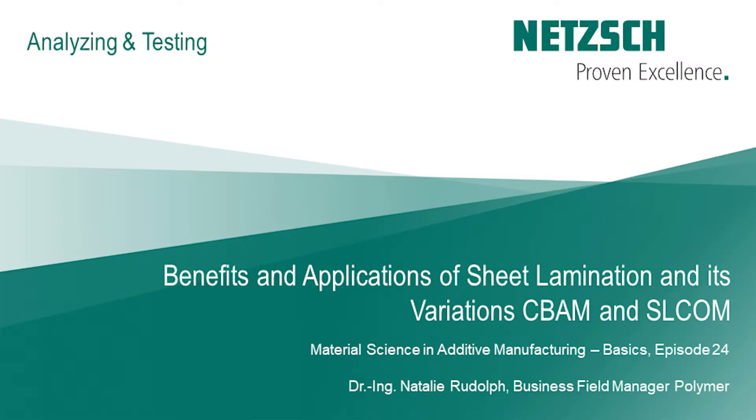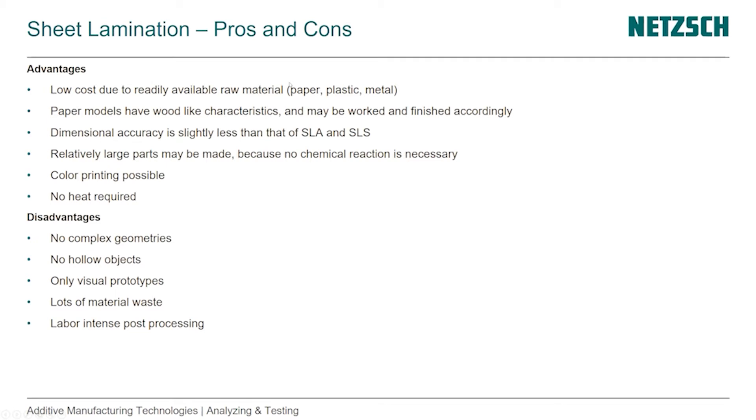In this episode, I'll talk about benefits and application of sheet lamination and some of its variations. The advantages of the process are that it's very low cost because it's readily available raw material. It's commonly done with paper. There were some processes with plastic and metal, but that is less and less used.